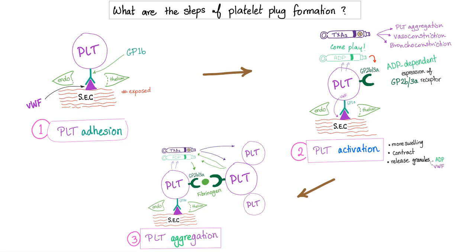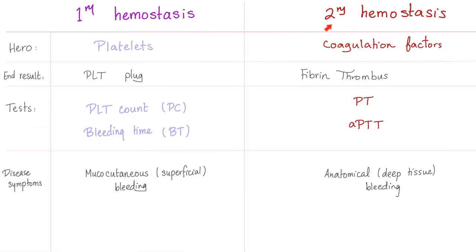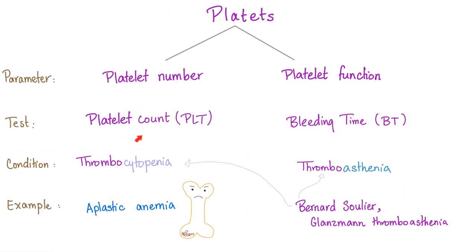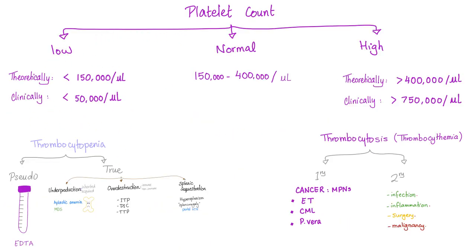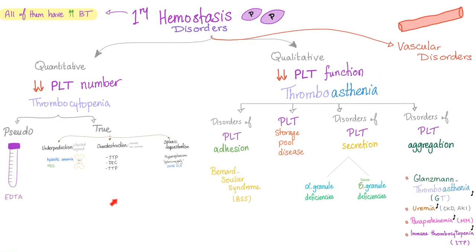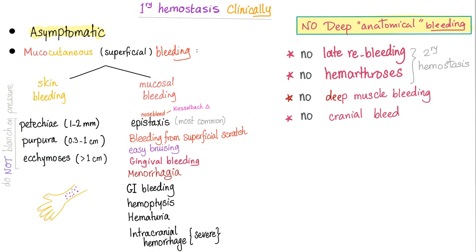Remember primary hemostasis or platelet plug formation: whenever the platelets see an endothelial injury, they stick. Since HUS is a problem with primary hemostasis, platelet count will be low and bleeding time will be high. The patient might suffer superficial bleeding, but this is rare. The problem in HUS is with platelet count, which elevates the bleeding time. Thrombocytopenia means platelet counts less than 150,000. Many patients are asymptomatic; mucocutaneous bleeding can happen, but deep anatomical bleeding will almost never happen.